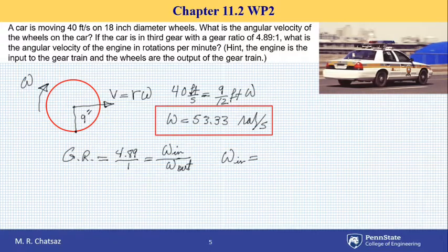So if I plug in the numerical value, omega in, or speed of the engine, is going to be 4.89 times 53.33, and that turns out to be 260.8 radians per second.